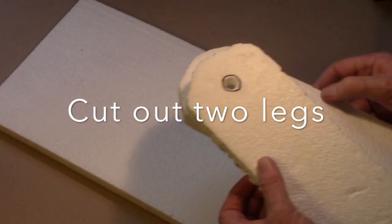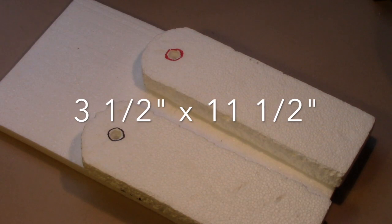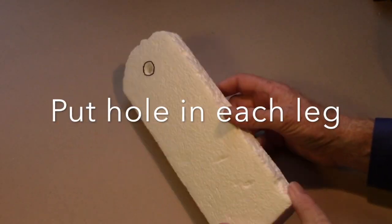And the larger piece of Styrofoam, and this is where you'll have to cut out both legs. Once you have them cut out, put a hole in the top of each leg to slide through the dowel.